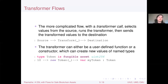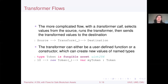There's also a more complicated form called transformer flows, which have a transformer call in them. They select values from a source, run the transformer on each value, and send the transformed values to the destination — written as: source arrow transform(transformer) arrow destination. The underscore represents the position in the argument list where values from the source are inserted.